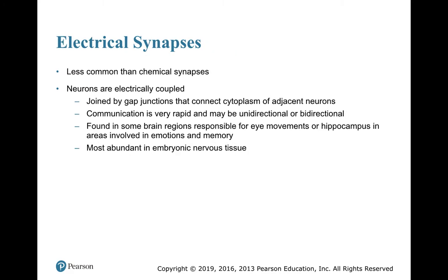Electrical synapses are much less common. In an electrical synapse, neurons are electrically coupled — like splicing two wires together — joined by gap junctions that connect the cytoplasm of adjacent neurons. Communication is very rapid and can be unidirectional or bidirectional. These are found in brain regions responsible for eye movements and the hippocampus, and are more abundant in embryonic nerve tissue than in adult tissue.